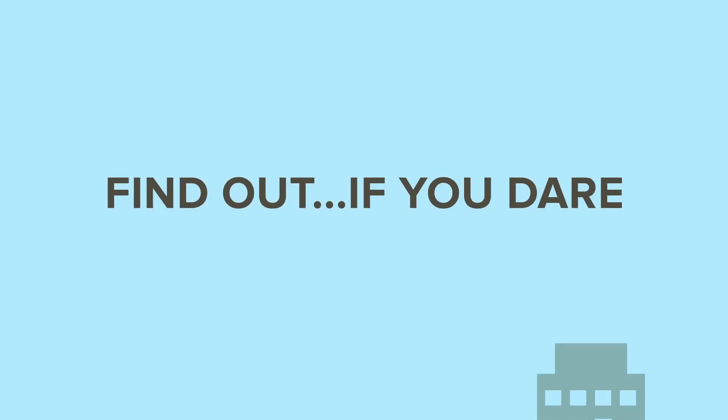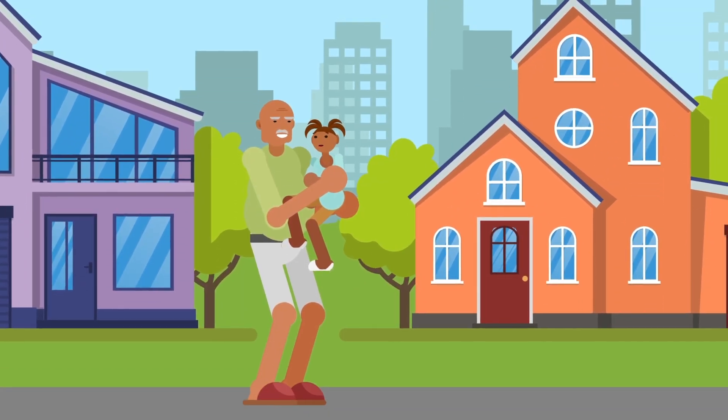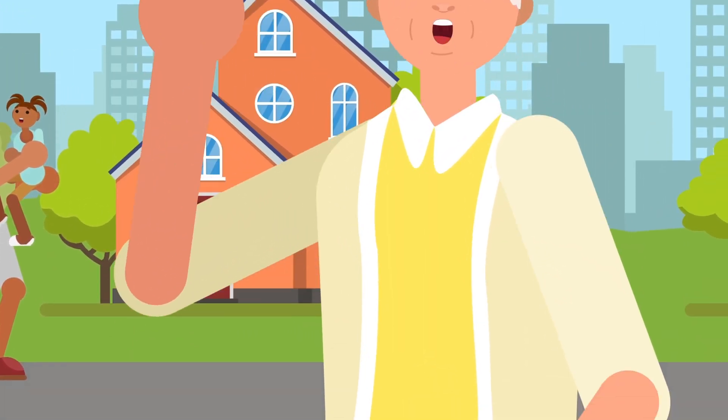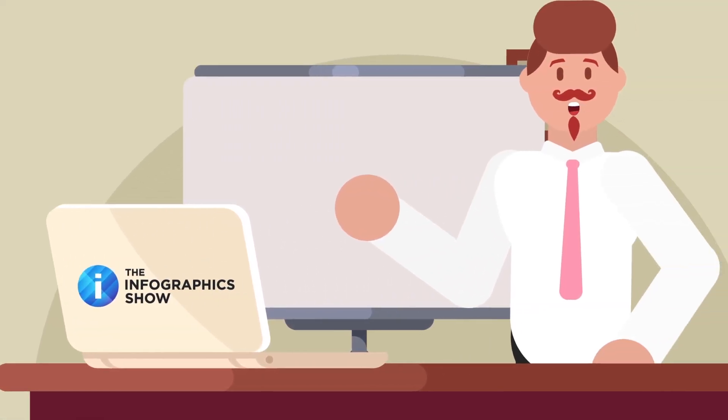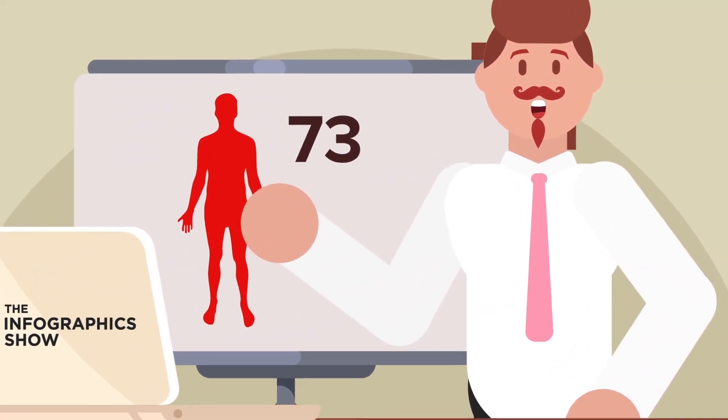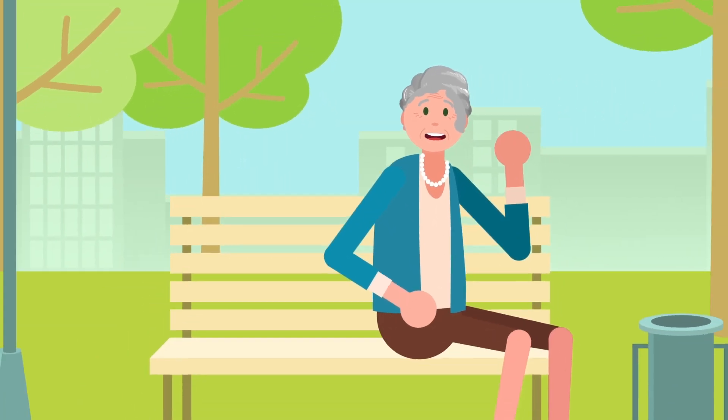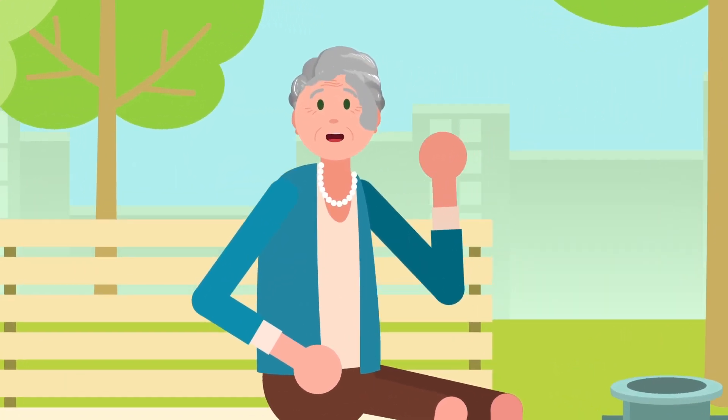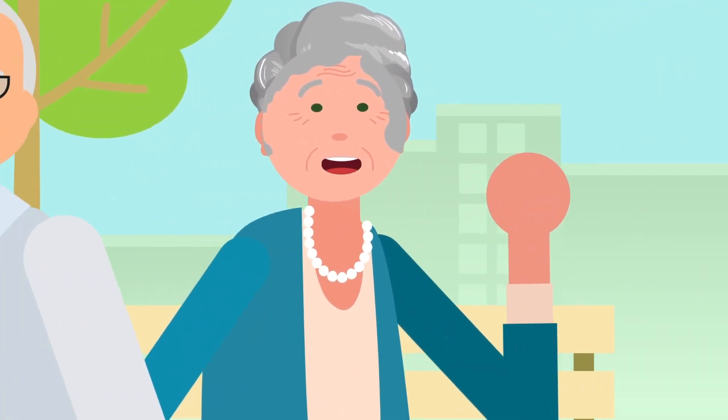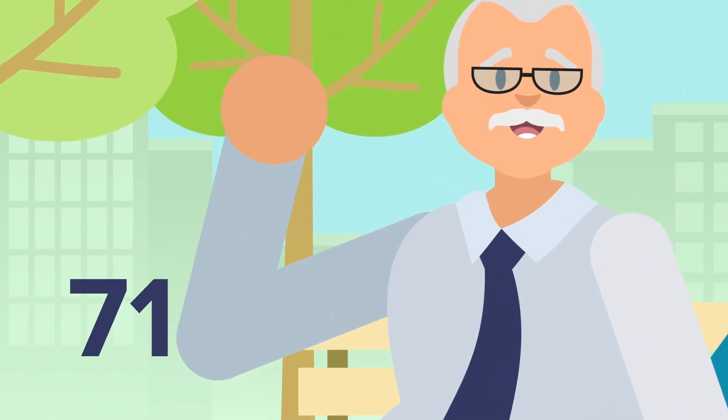So when will you die? Find out, if you dare. We're certainly lucky to live in a time when global life expectancy is at an all-time high. The average person alive on earth today can expect to live up to the ripe old age of 73. Women have it a bit better with an average life expectancy of 75 and a half years, while men can expect to live just under 71 years.